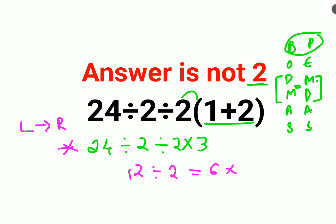Into 3. Wait, I'll just write this properly. So first we did 24 divided by 2, that gets you 12, divided by 2 into 3. So 12 divided by 2 gets you 6 into 3, that gets you 18.